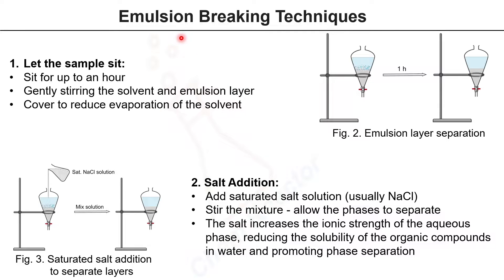What are the emulsion breaking techniques? The first and simplest one is to let the sample sit. After completion of the reaction, transfer the reaction mixture to a separating funnel and allow the layers to separate.